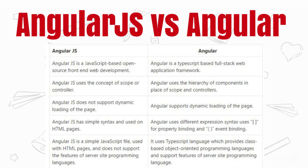In AngularJS, for two-way binding you have to use ng-model, whereas for one-way binding you have to use ng-bind. These are some directive differences in AngularJS. In Angular, there is no such separation — we use ng-model similarly for any kind of binding.